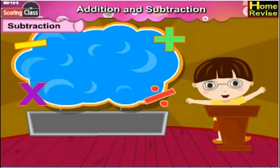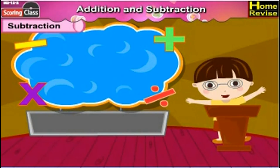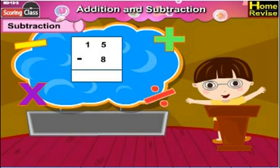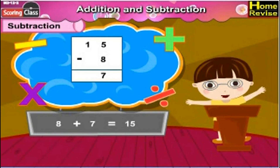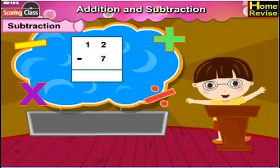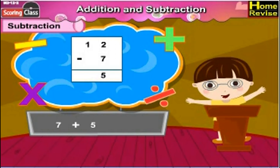Children, as Moti has told us, we need to practice small additions a lot — then only we'll be able to solve the upcoming examples. 15 minus 8 is 7, because 8 plus 7 is equal to 15. Did you get the connection? Next: 12 minus 7 is 5, as 7 plus 5 is 12.